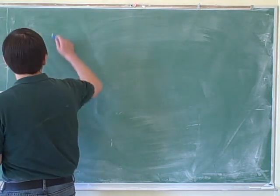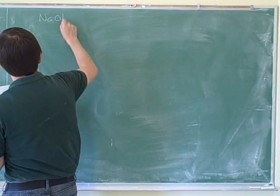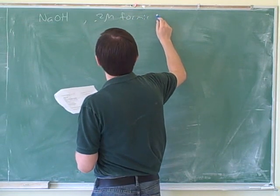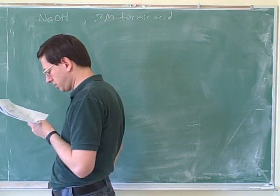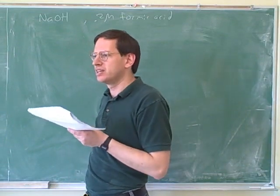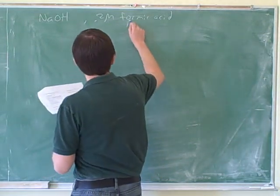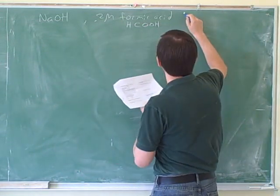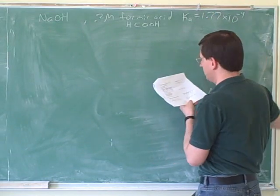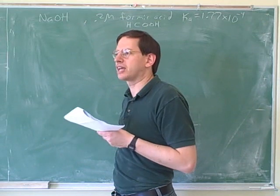I don't think we need to write down the formula. We can just say it's formic acid. But they told us the formula at the top of the page, right? HCOOH. They said the formic acid was HCOOH, and its Ka is 1.77 times 10 to the negative 4. Now my question is, if we're titrating formic acid with sodium hydroxide, what is the chemical reaction that's going to happen?